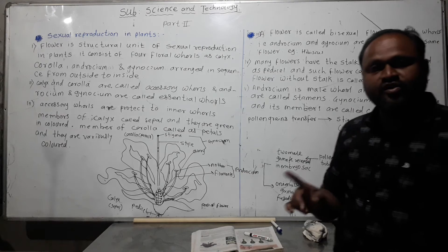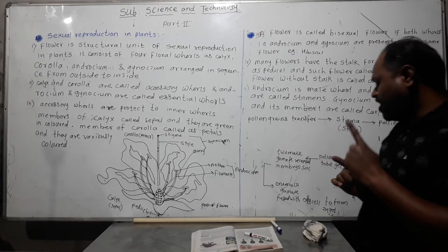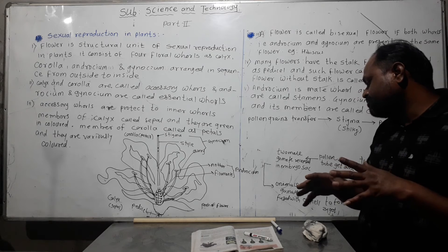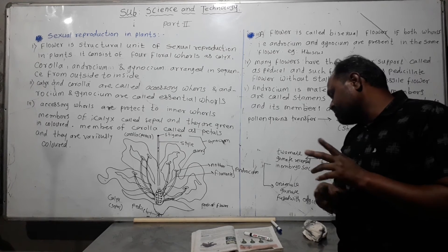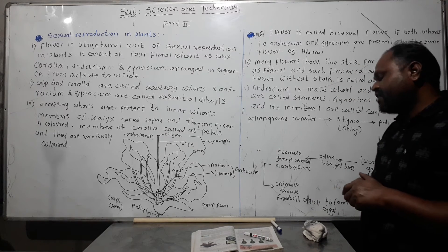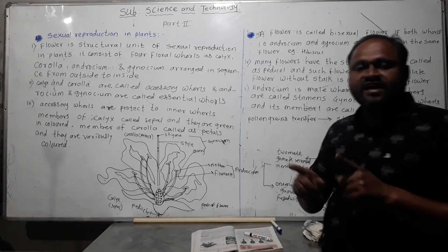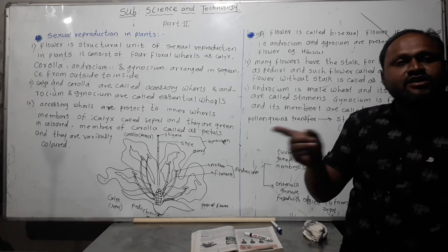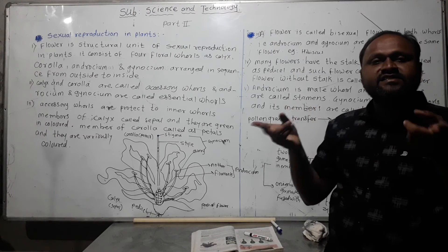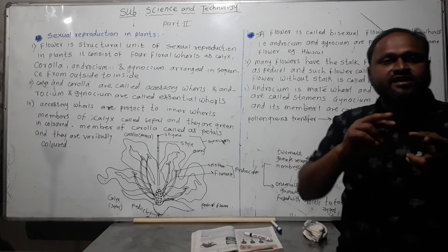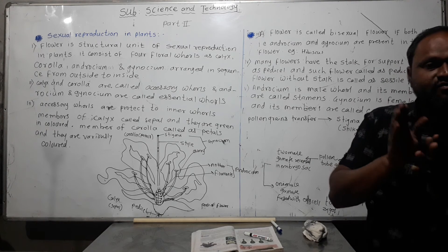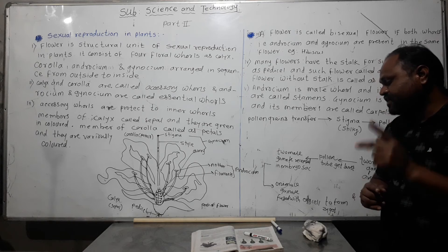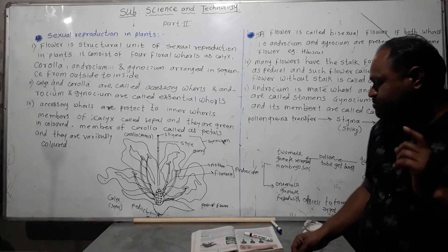There are two types of pollination: self-pollination and cross-pollination. Self-pollination involves pollen transfer within only one flower or between two flowers on the same plant (same species). Cross-pollination involves pollen transfer between flowers of different plants of different species.